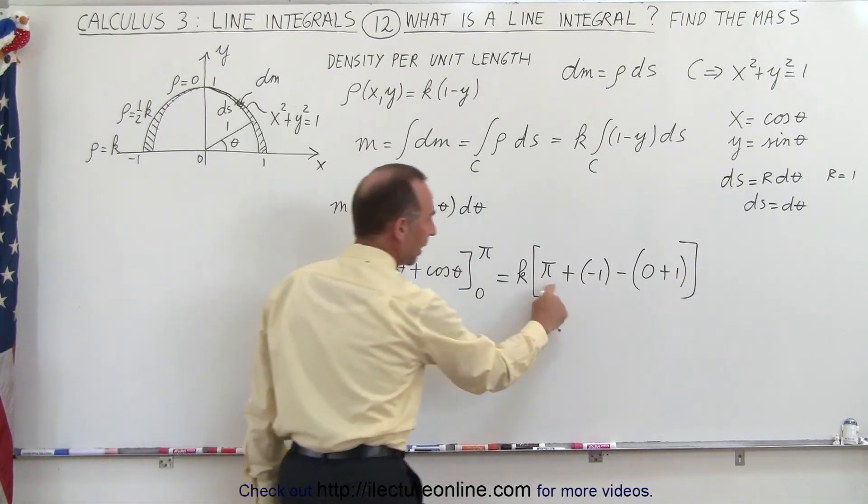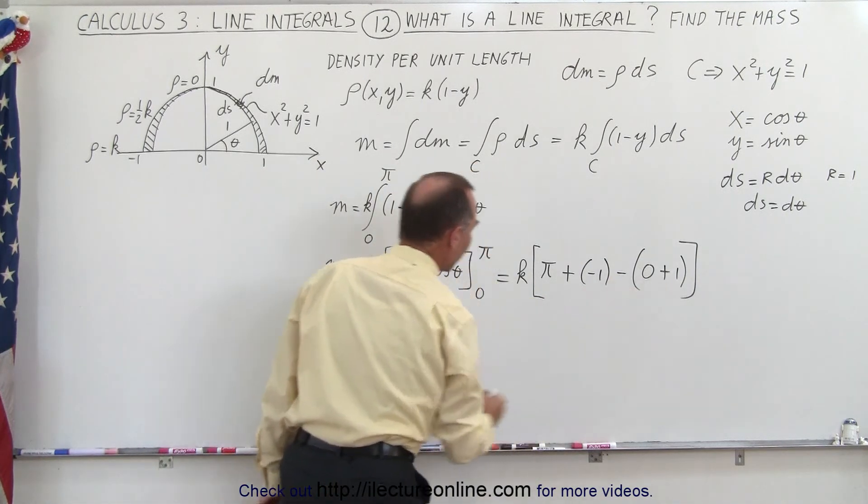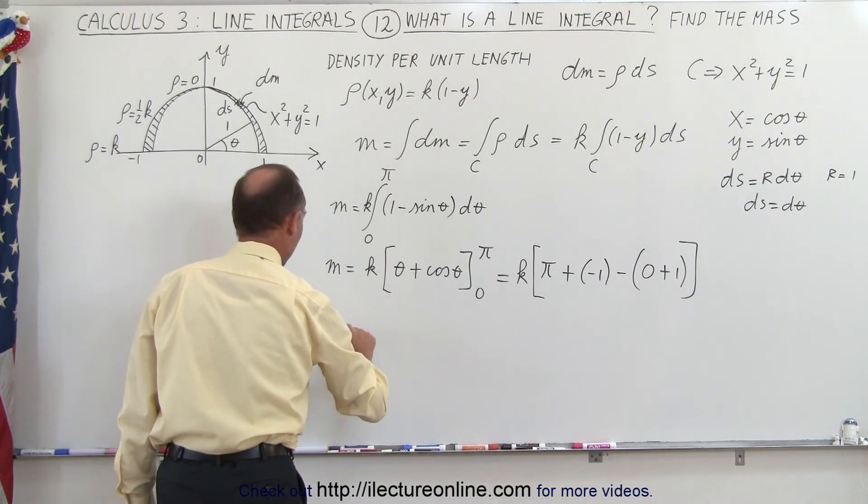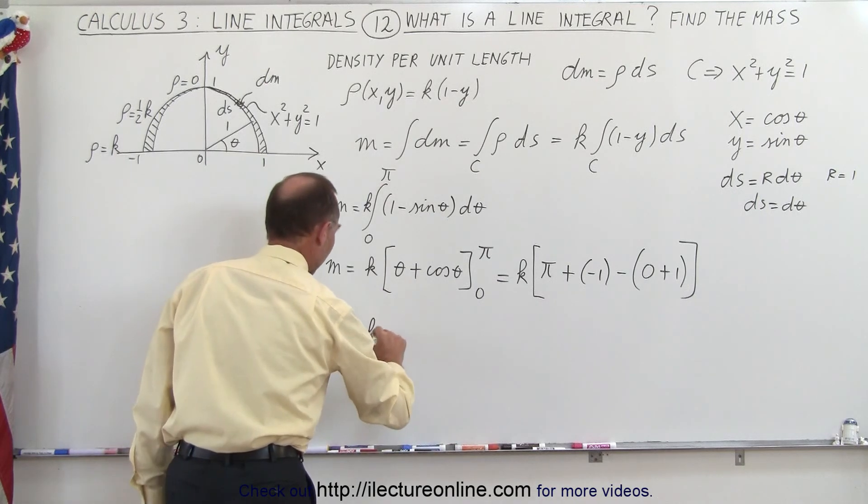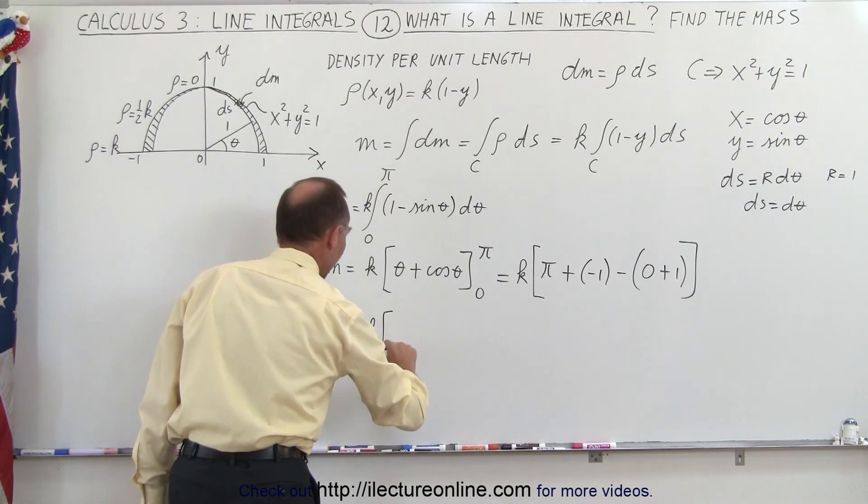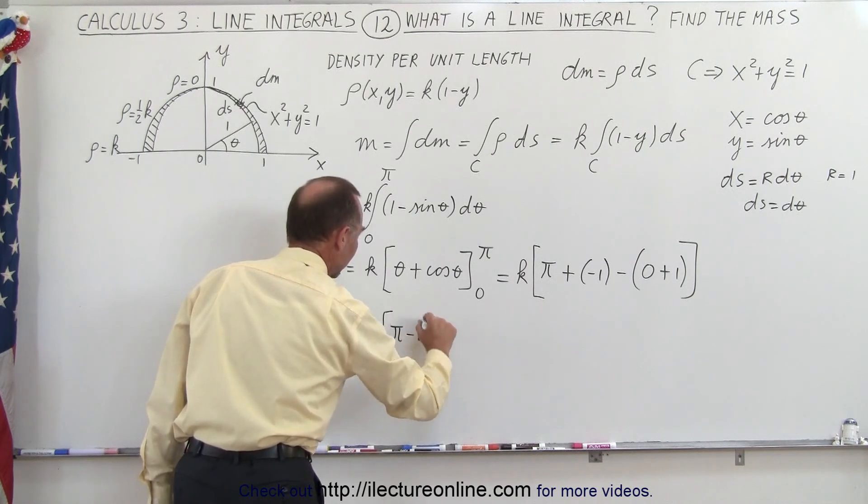Okay, so now that looks like pi minus 1 minus 1, or pi minus 2, so ultimately the mass of this wire is going to be equal to k times pi minus 2.